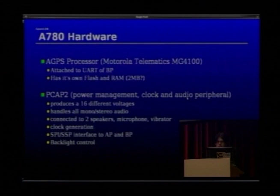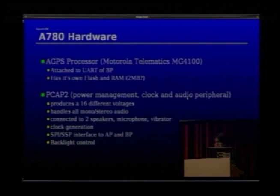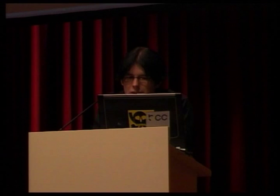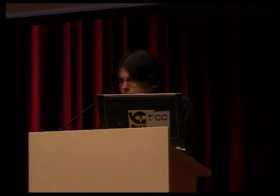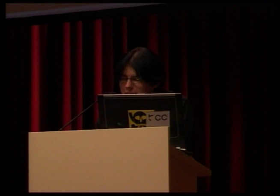There's also an AGPS processor — another ARM7-based CPU with 2MB of flash and RAM — connected via UART to the baseband processor, dedicated to GPS processing. The PCAP2 chip handles power management, clock, and audio peripherals — it produces 16 different voltages for the phone, handles mono and stereo audio (stereo for MP3 playback, mono for ringtones), clock generation, and backlight control. There are at least two independent backlights: one for the LCD display and one for the flip buttons, each with independent pulse-width modulation control.